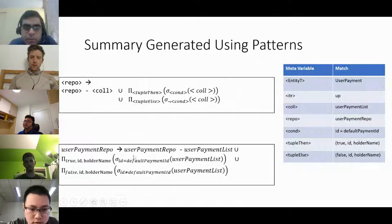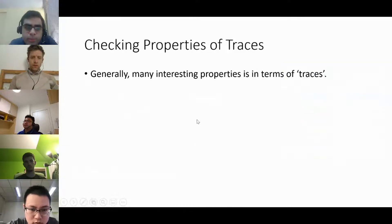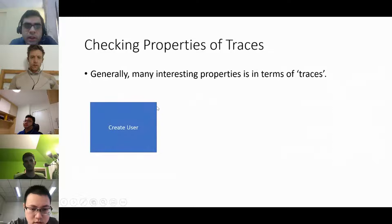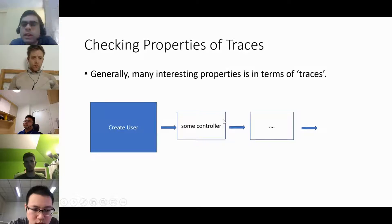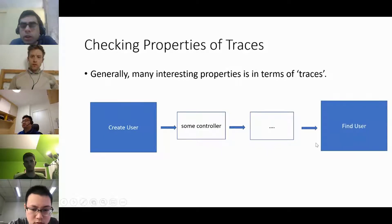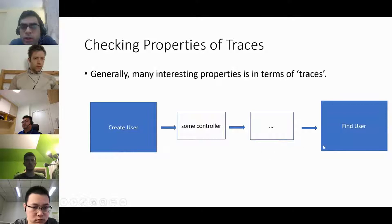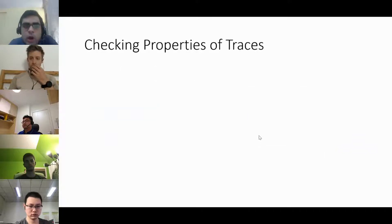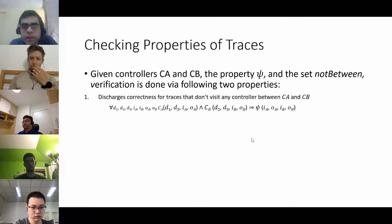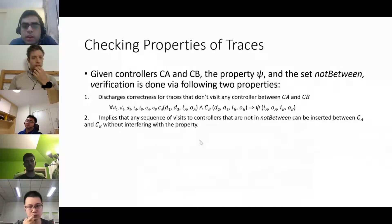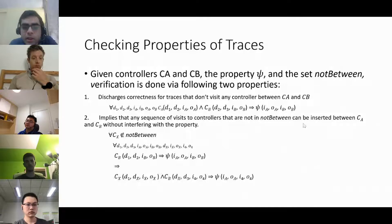We can also use this summary to check properties of traces. Consider a workflow where you create a user, go through unrelated controllers, then look up that user by last name. An interesting property is: if you created a user and then try to find that user, it should appear in the results. We perform trace property checking through two formulas — a base case and an inductive case — though the details are in the paper.